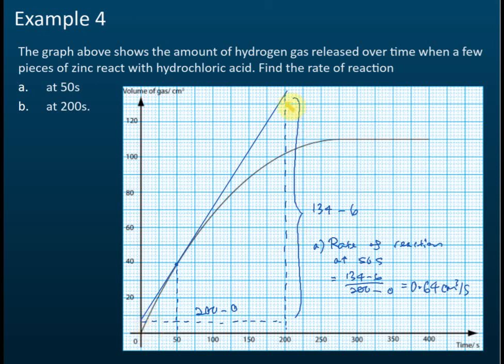This is 6. So the height is 134 minus 6. And the width is 200 seconds, 200 minus 0. So we take 128 divided by 200. So, 0.64.